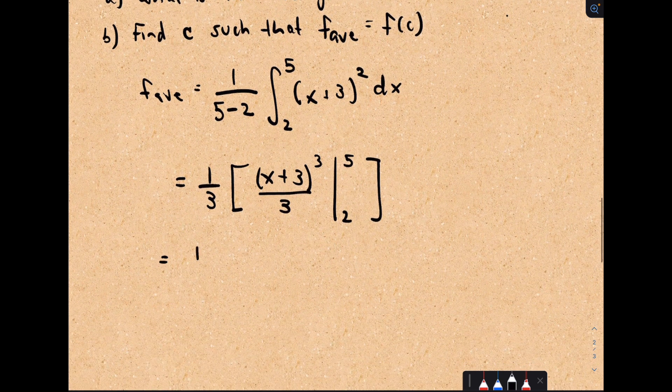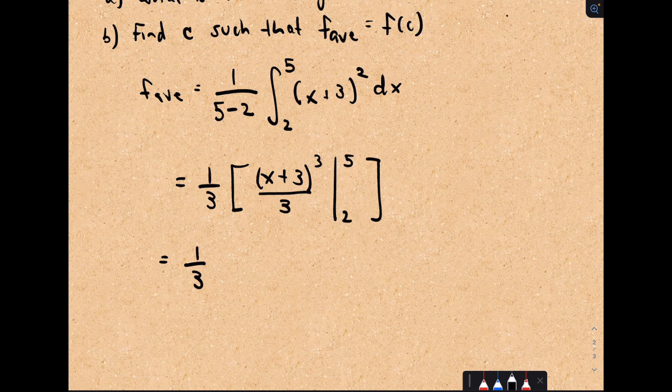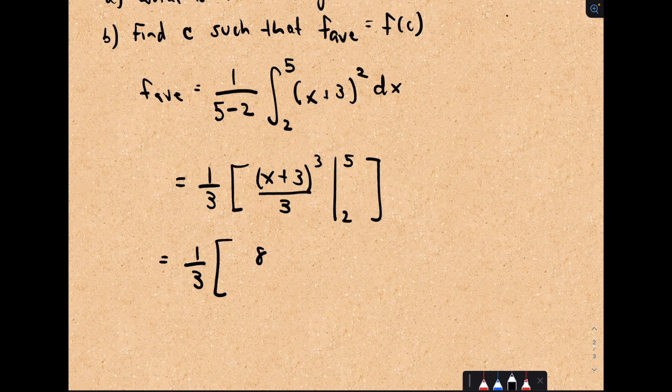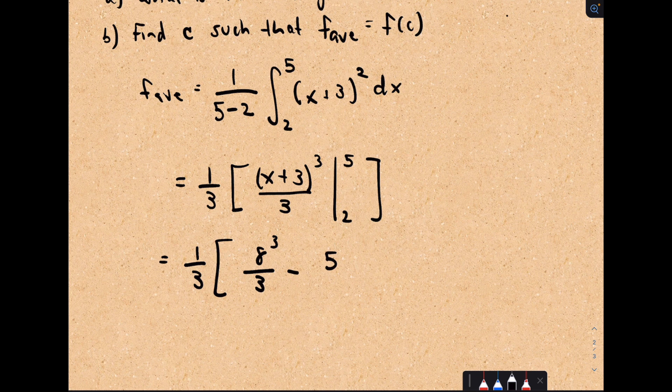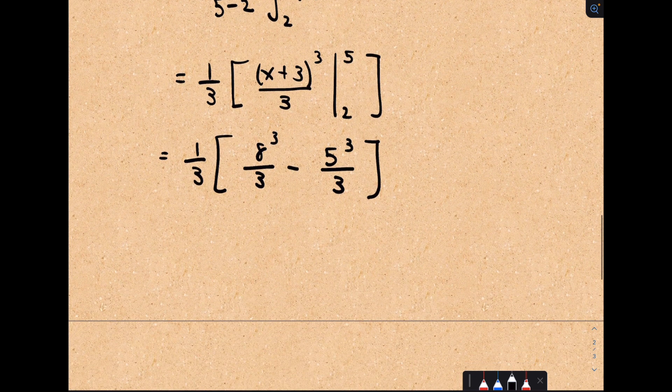This is going to be a very lovely number. We would have 5 plus 3, that would give us 8 to the third power over 3, minus we would plug in 2 for x, so that would give us 2 plus 3, or 5 to the third over 3.